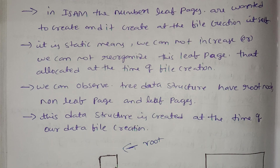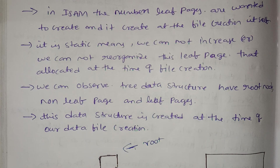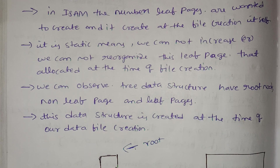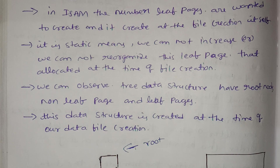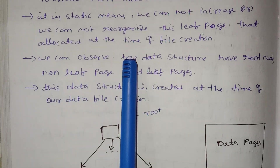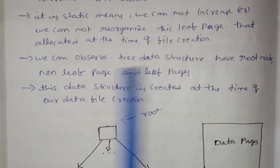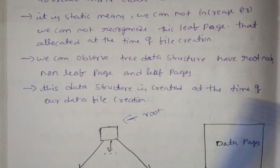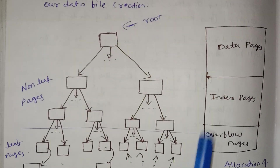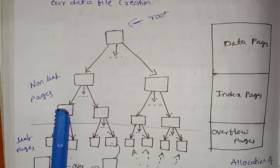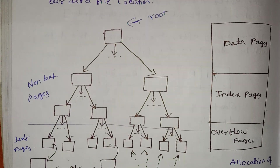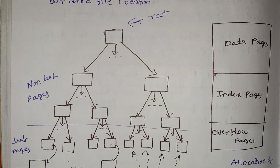We cannot increase the leaf pages or reorganize the data structure. We can observe three components in the data structure: a root node, non-leaf pages, and leaf pages.